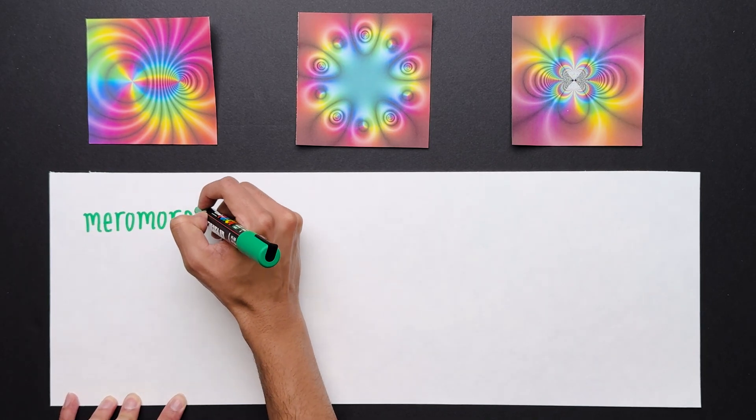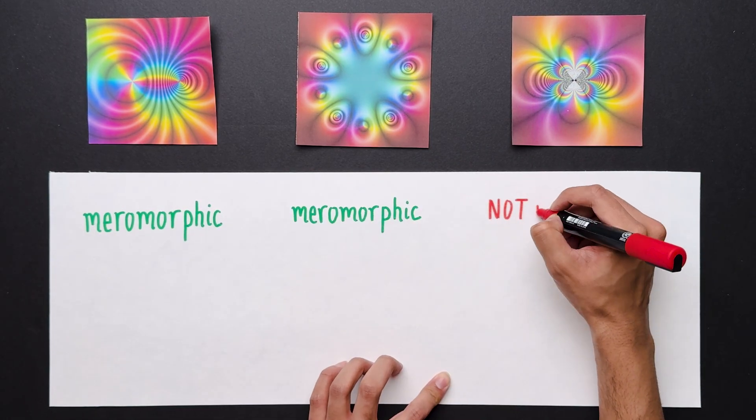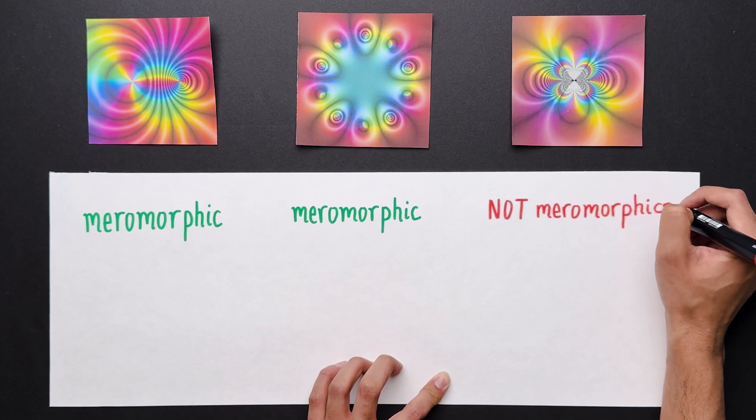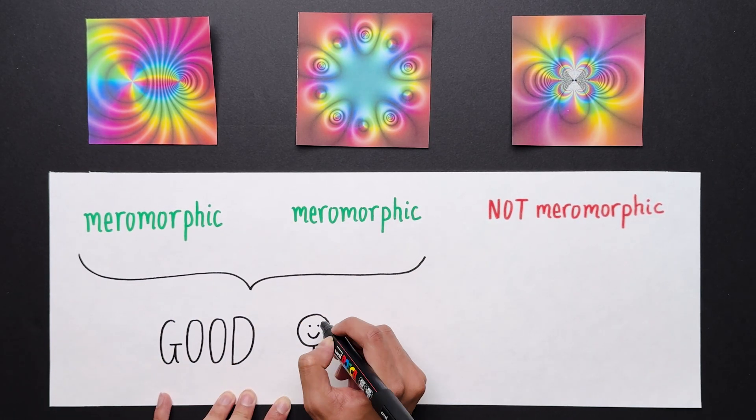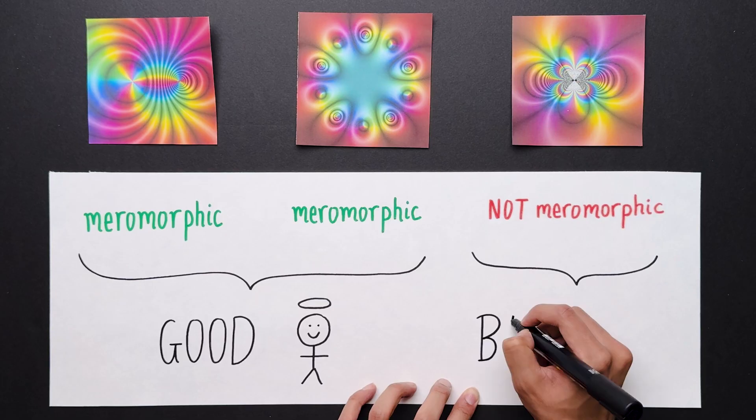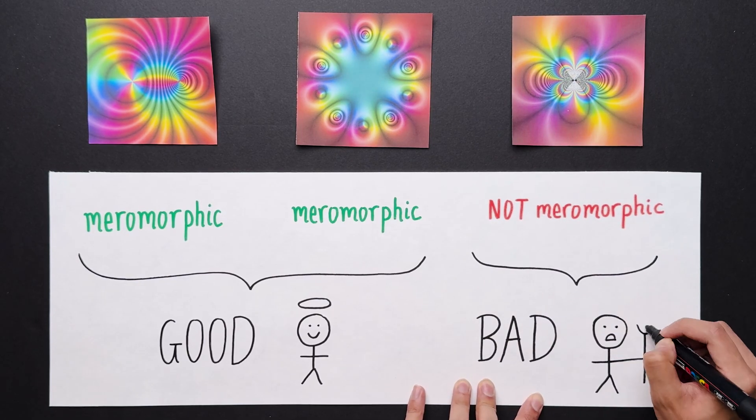The two functions we saw earlier are meromorphic, but the function with an essential singularity is not meromorphic. We'll view these functions as being good, they have nice controlled behavior. We'll view this function as being bad, they're uncontrollable, and we'll ignore them for the rest of the video.